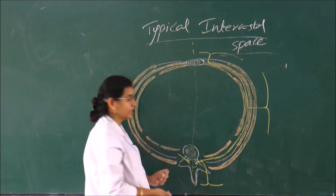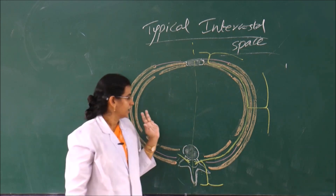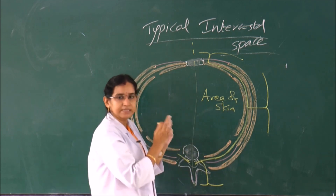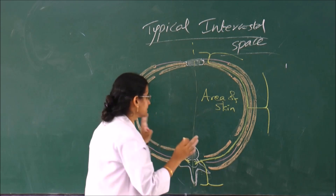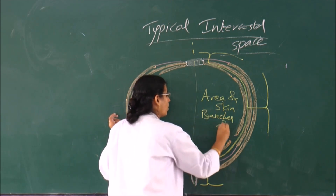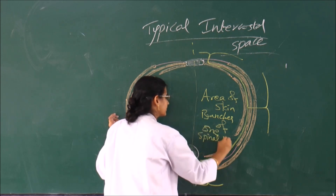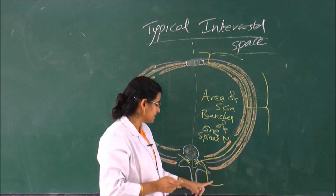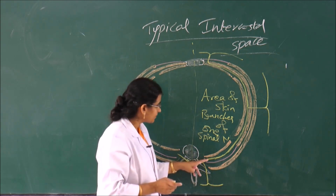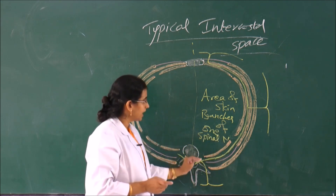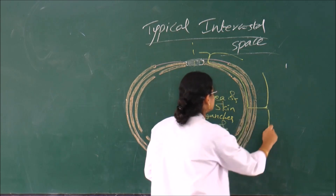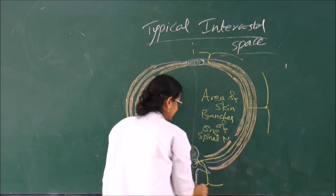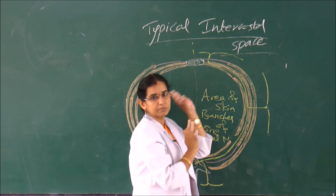Now you can understand the concept of a dermatome. What is a dermatome? It is the area of skin supplied by branches of one spinal nerve. One spinal nerve has a dorsal branch and a ventral branch. The dorsal branch supplies the muscles and skin of the back. The ventral primary ramus is now called the intercostal nerve; it runs in the intercostal space in the costal groove, gives a lateral cutaneous branch, and terminates as the anterior cutaneous branch. The area of skin supplied by all branches of one spinal nerve together is called one dermatome.